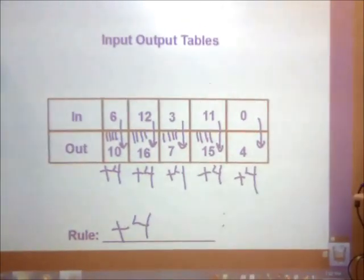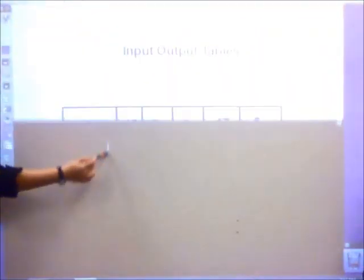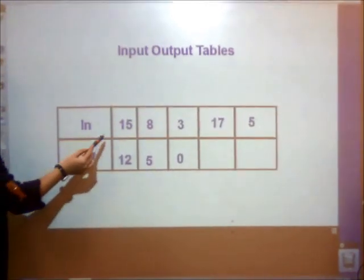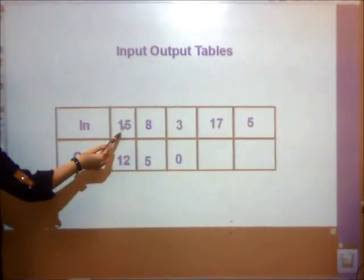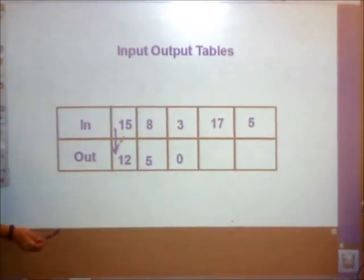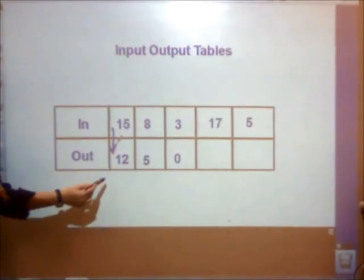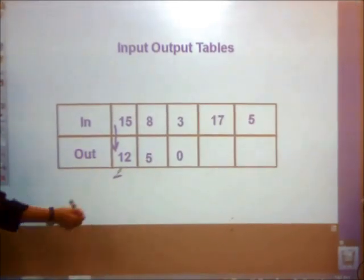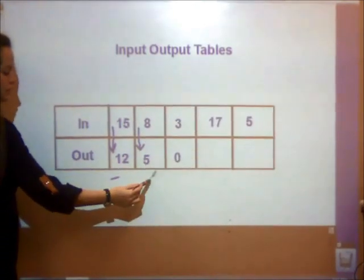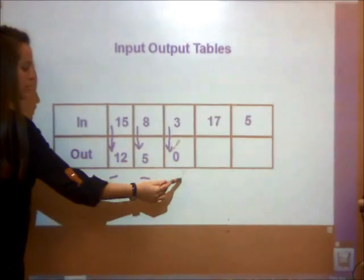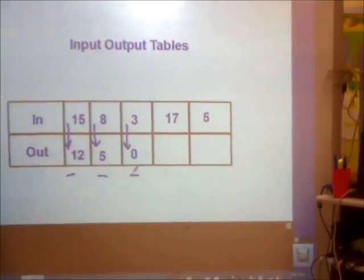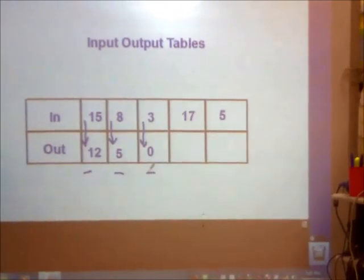This input output starts with 15. I put in 15, I get out 12. When I go from 15 to 12, I know my number is getting smaller. So I'm taking away, which is subtraction. 8 to 5 is getting smaller. 3 to 0 is getting smaller. My last ones are blank. So I'm going to start and check to see what my numbers are getting.